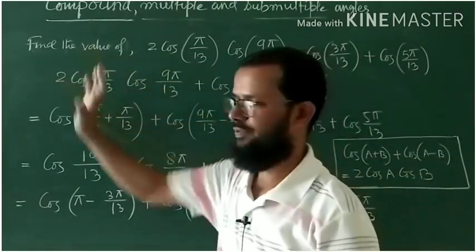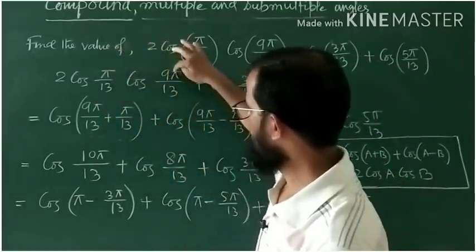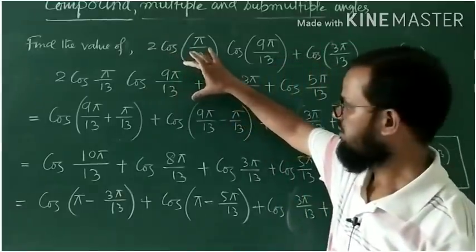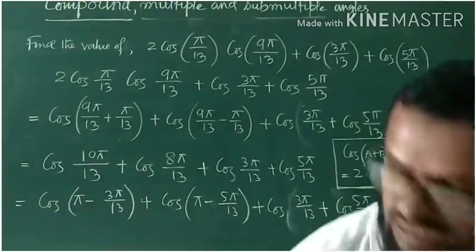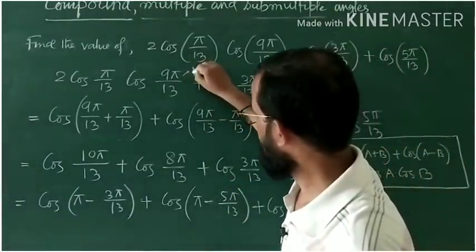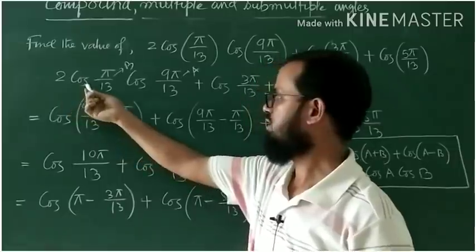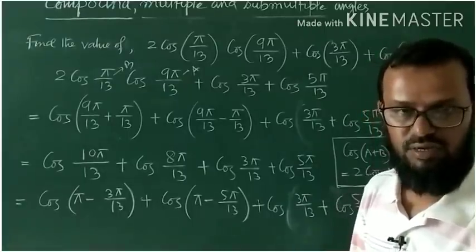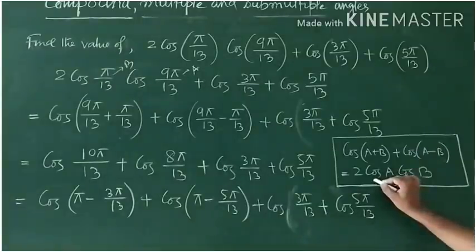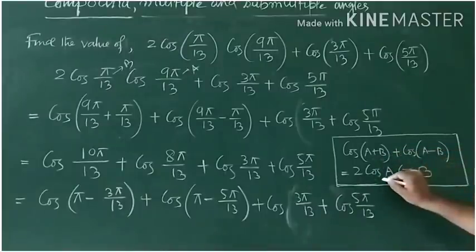I have taken the expression. First, I am considering two angles: π/13 and 9π/13. Among these two angles, 9π/13 is the greater angle and π/13 is the smaller. I suppose the greater angle is A and the smaller is B. So ultimately the expression becomes 2cosA · cosB. And you know the result: 2cosA·cosB = cos(A+B) + cos(A−B). I have given a list of formulas — go through it and you will find this identity.